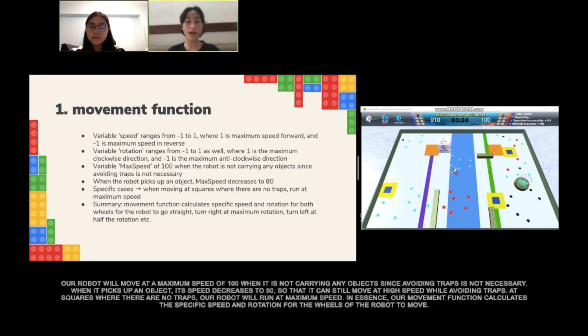At squares where there are no traps, our robot will run at full speed. In essence, our movement function calculates the specific speed and rotation for the wheels of the robot to move.